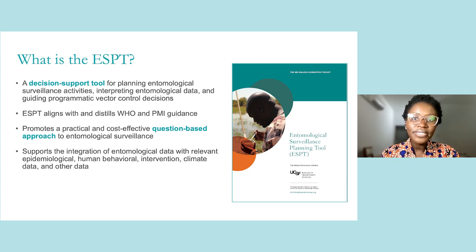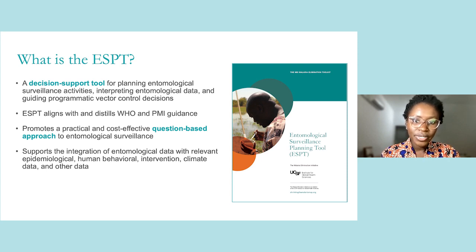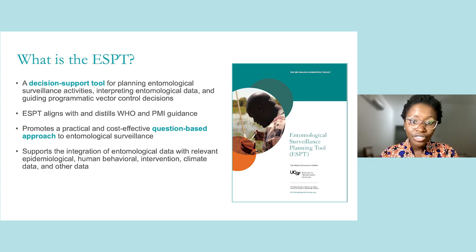The ESPT can be used in multiple ways. First, it can be used to design and plan entomological surveillance activities, including selecting appropriate indicators and sampling methods. Second, it can be used to interpret entomological data in the context of epidemiological, human behavior, and other data. Finally, it can be used to guide program decisions on selecting, targeting, and tailoring appropriate vector control interventions.